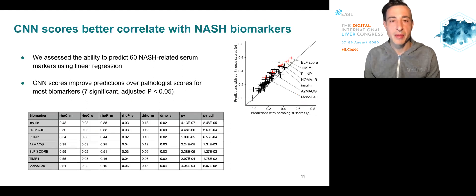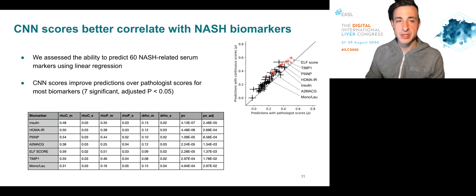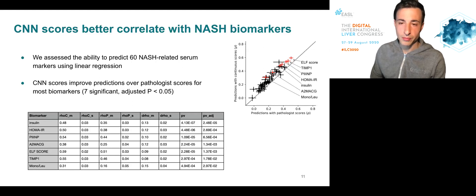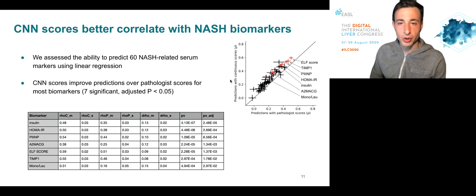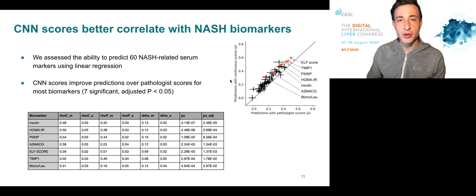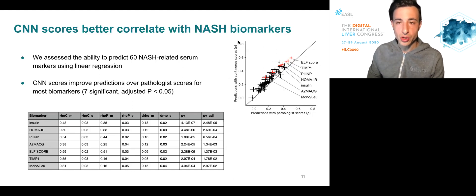We then assessed the ability to predict 60 NASH-related serum markers using linear regression. Specifically, we assessed the ability to predict the biomarkers using a linear model, either considering the pathology scores as input or the continuous scores as input. The agreement between the predicted and observed biomarker values was assessed using Spearman correlation, which is the unit on both the y and x-axis.